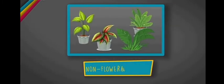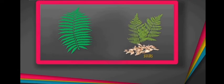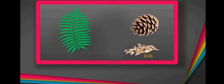Non-flowering plants. The plants which do not bear flowers are called non-flowering plants. It means they have no reproductive organ. They reproduce by spores and also by seeds that develop in their cones.